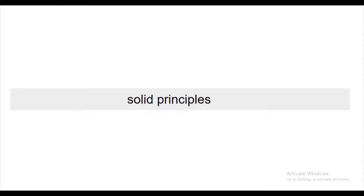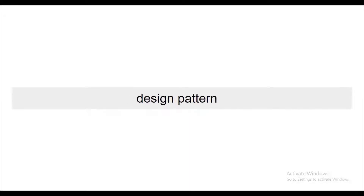L is the Liskov Substitution Principle — you should be able to use any derived class instead of the base class without modification. I is Interface Segregation — a client should not be forced to use an interface that is not relevant to it. D is Dependency Inversion — high-level classes should not depend on low-level classes; both should depend on abstraction. I have a detailed video with coding examples in my playlist.